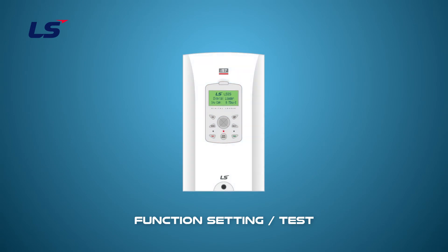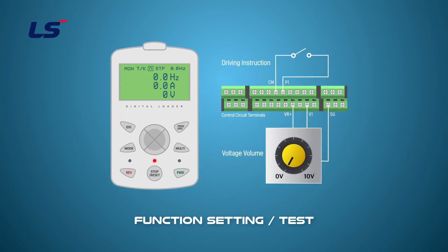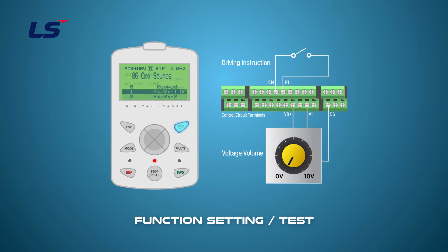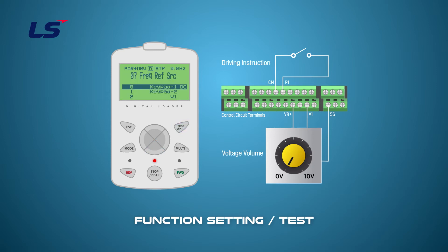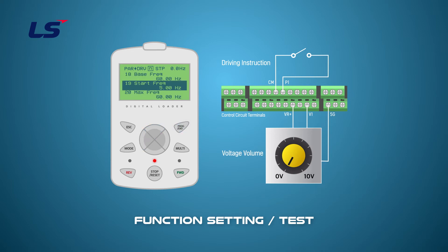Let's set the start frequency to see if the output starts with the set frequency. First, we will set the DRV6 command source to FXRX1 and DRV7 frequency reference source to V1. Set start frequency DRV19 to 5 Hz, and press the ESC key to return to monitor mode.